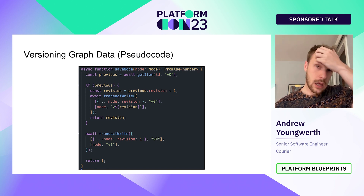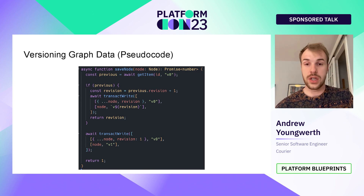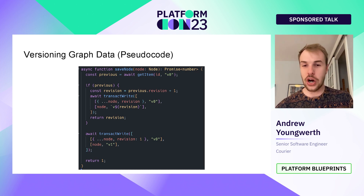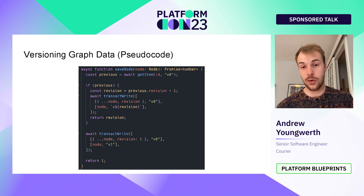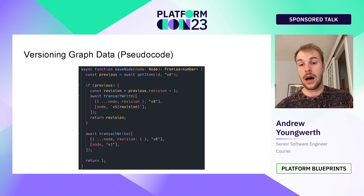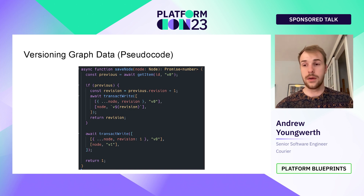We'll update the pseudocode a bit. We're going to call this function 'save node' — this is what we use to save a node to the nodes table. We're always fetching V0 when determining the previous version, so we can grab that revision number. We save two copies: one with the up-to-date revision number pointed to V0, and a second copy with the current revision number. We also return the revision. If there's no previous version, we're on revision one. That returned revision is something we'll get to shortly.